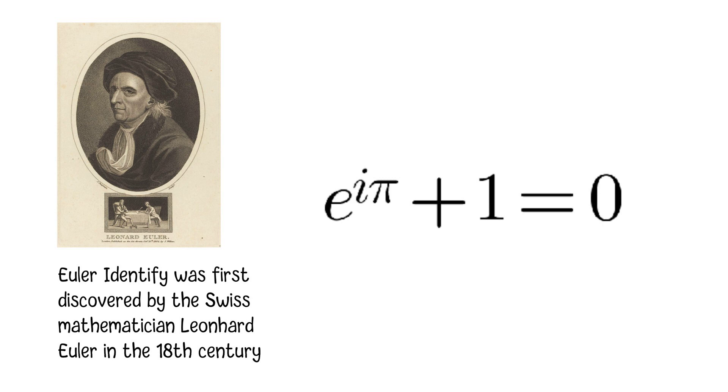After a few years, Euler began to explore the properties of exponential functions, trigonometric functions, and complex numbers, and he developed this equation.